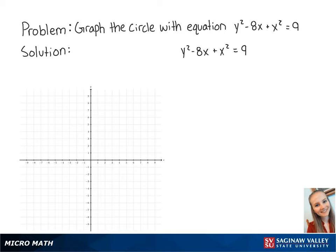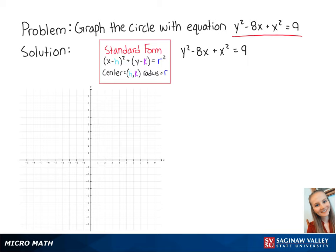For this problem, we want to graph the circle with the equation y squared minus 8x plus x squared equals 9. First, we need to put the equation into standard form. To do this, we need to complete the square for x and for y. To make this easier, we first want to reorder this equation to be x squared minus 8x plus y squared equals 9.